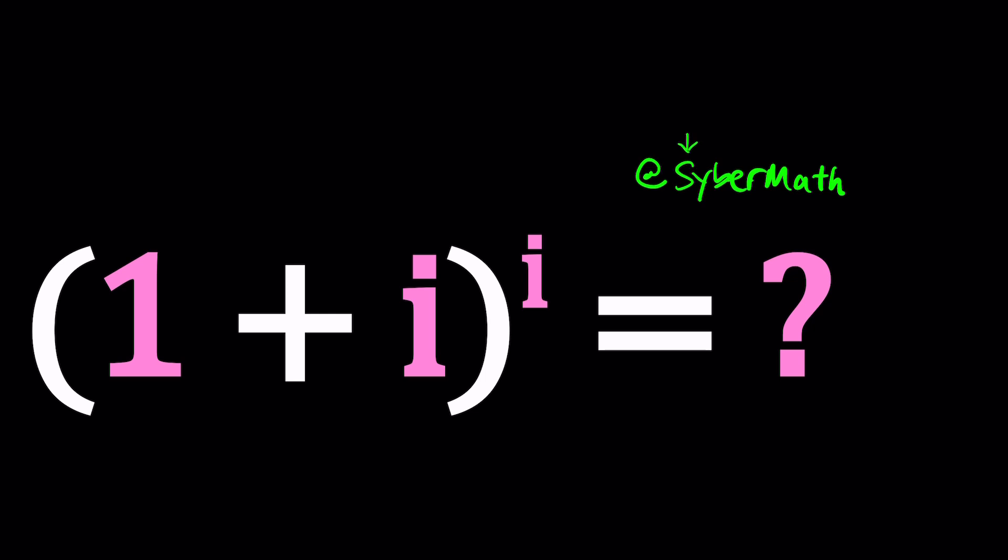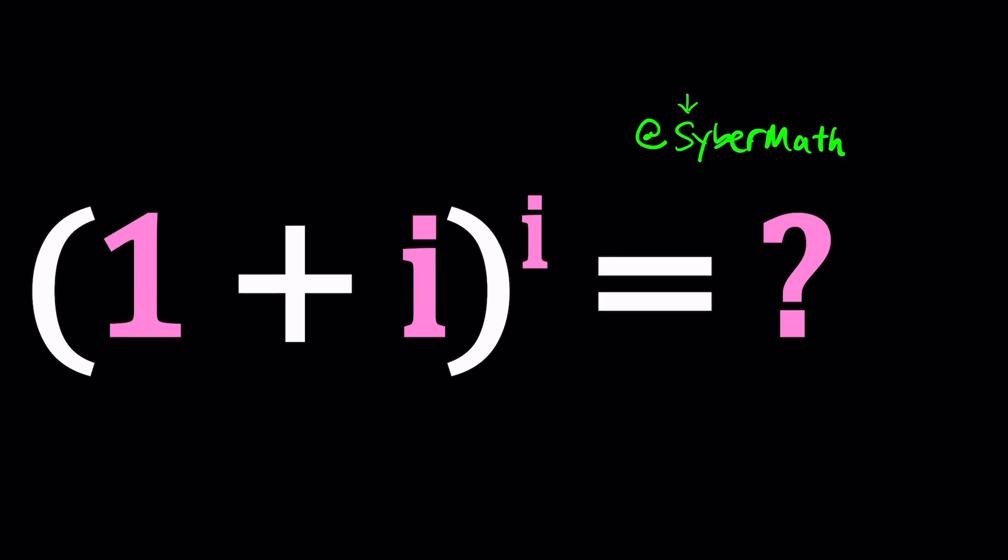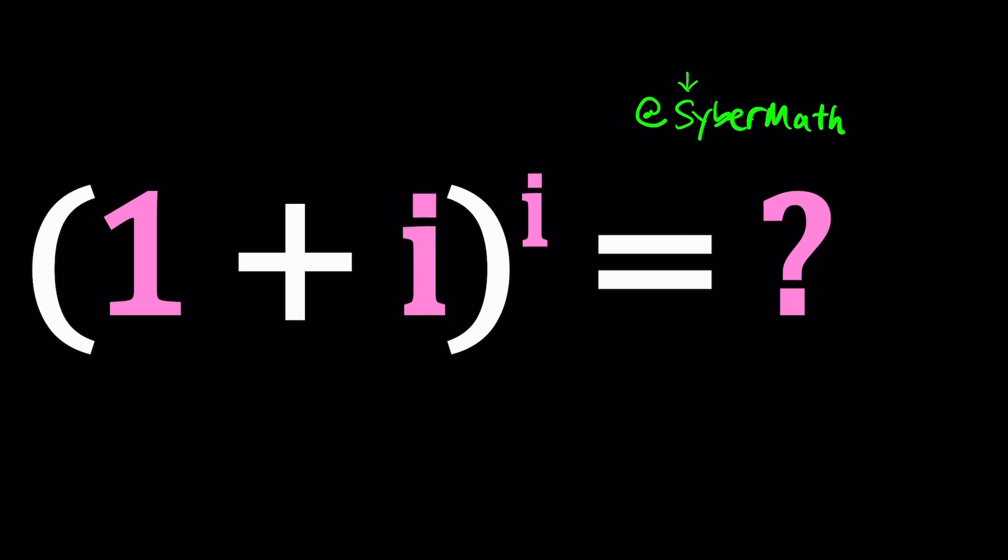So let's see how we can do the complex exponentiation on this problem. First of all, think about some integer powers of 1 plus i. 1 plus i is a very common complex number because if you take it to the second power, you get 1 plus 2i plus i squared. But you should know i squared equals negative 1 because i is the square root of negative 1. So i squared is negative 1, which means these two cancel out, leaving us with 2i.